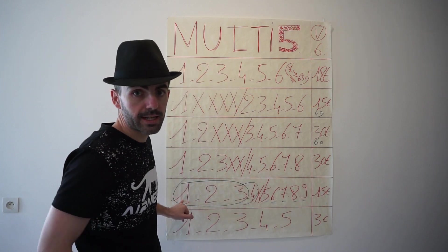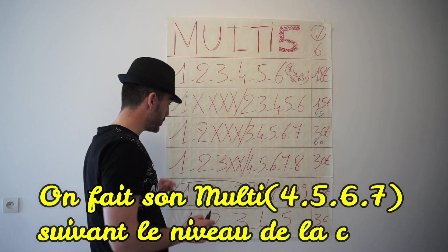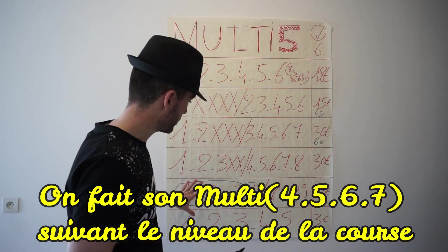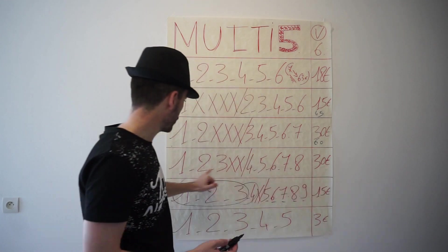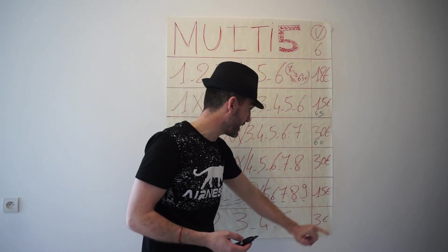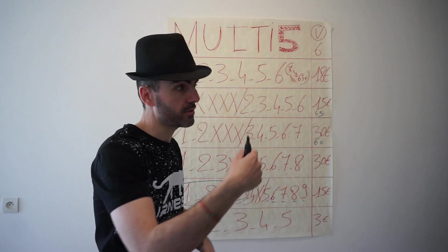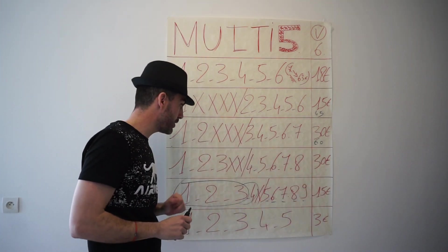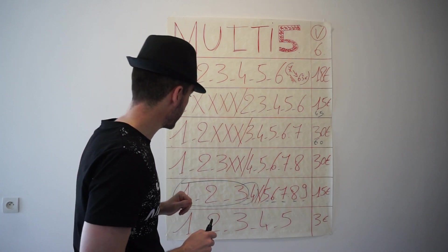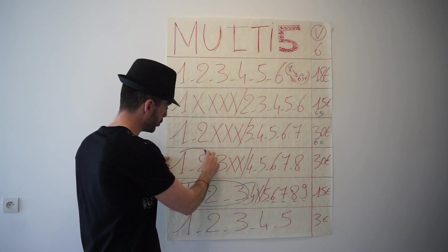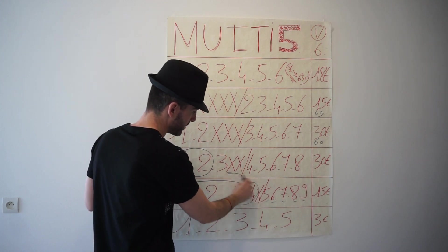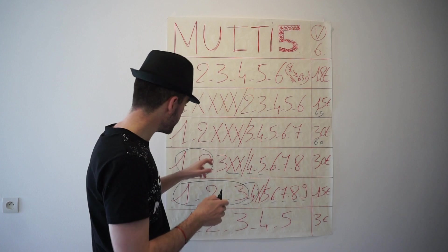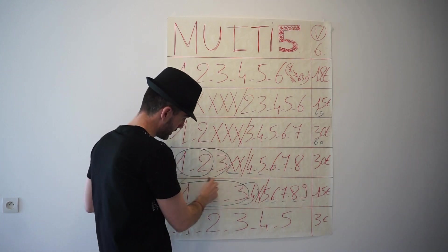Jeu suivant : 3 de base, double X, déjà un petit peu meilleur que le précédent, 30 euros. Avec 3 de base, double X, 5 derrière. Si on en rajoute un c'est 45, encore un c'est 63, et 84, etc. Pour toucher le multi en 5 il nous faut bien évidemment 2 de notre base minimum, parce qu'on a double X, et 2 de derrière pour le toucher une fois. Si on a les 3 de la base...